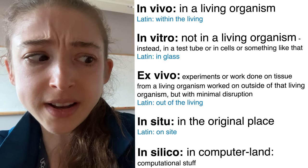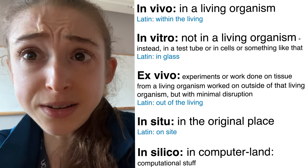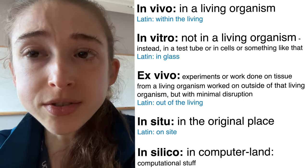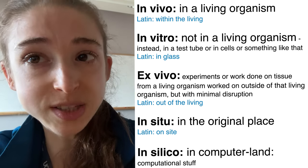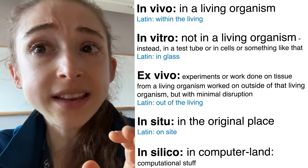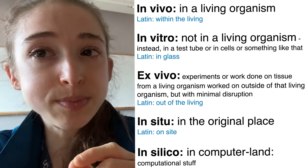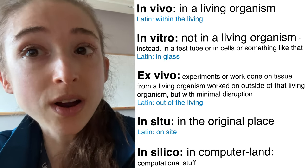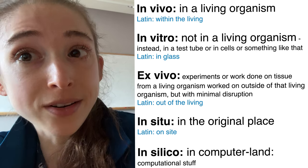In vivo versus in vitro. And then there's ex vivo, in situ, in silico. There's all these different 'in' terms that we use to describe where an experiment is taking place. It can get kind of confusing, but don't despair — here's a quick guide to what's what when it comes to what's happening where.